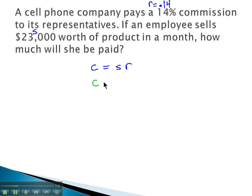The $23,000 is the amount that she sold, her sales for the month. Plugging this into our equation, the commission is equal to her sales, or the price that she sold, $23,000,